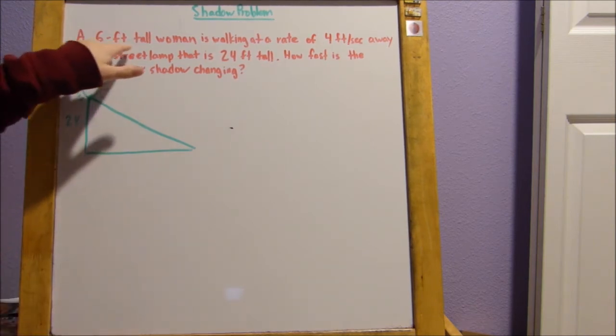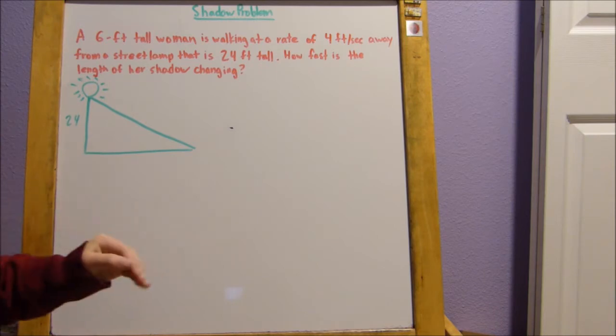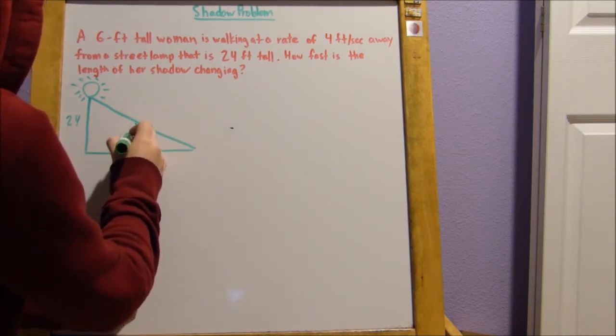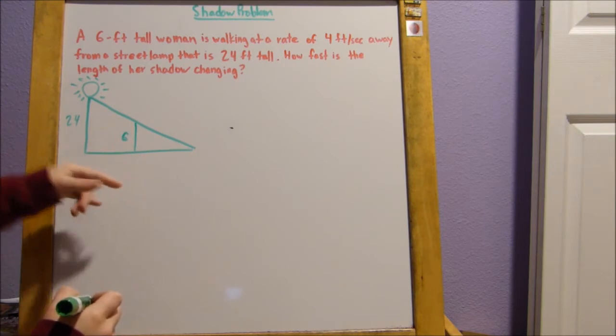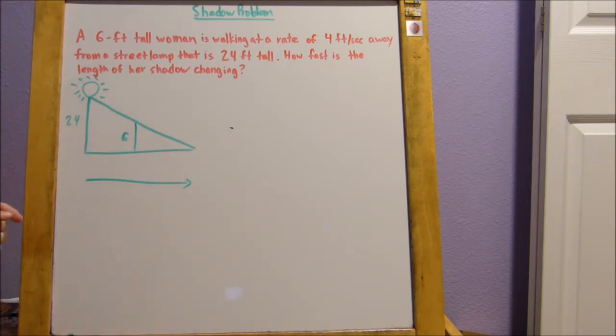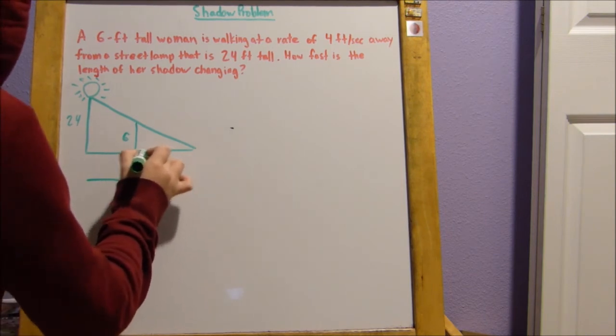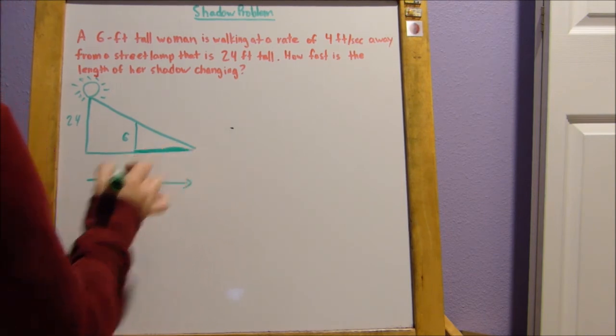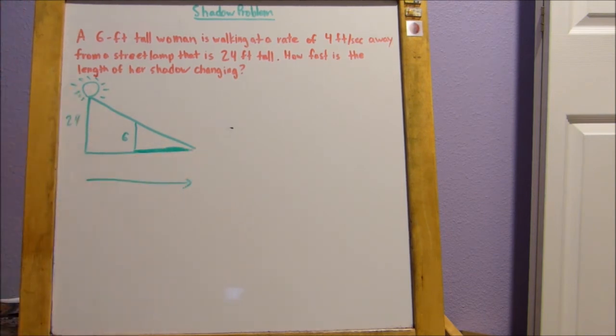Okay, then we have a six-foot-tall woman who's walking away. So she's going to be right here. Here's our six-foot-tall woman, and she's walking away. So she's walking in this direction. So that means that her shadow is right here. Because if the street lamp is behind her, it's illuminating her back. So that means her shadow is going to be projected in front of her, right?